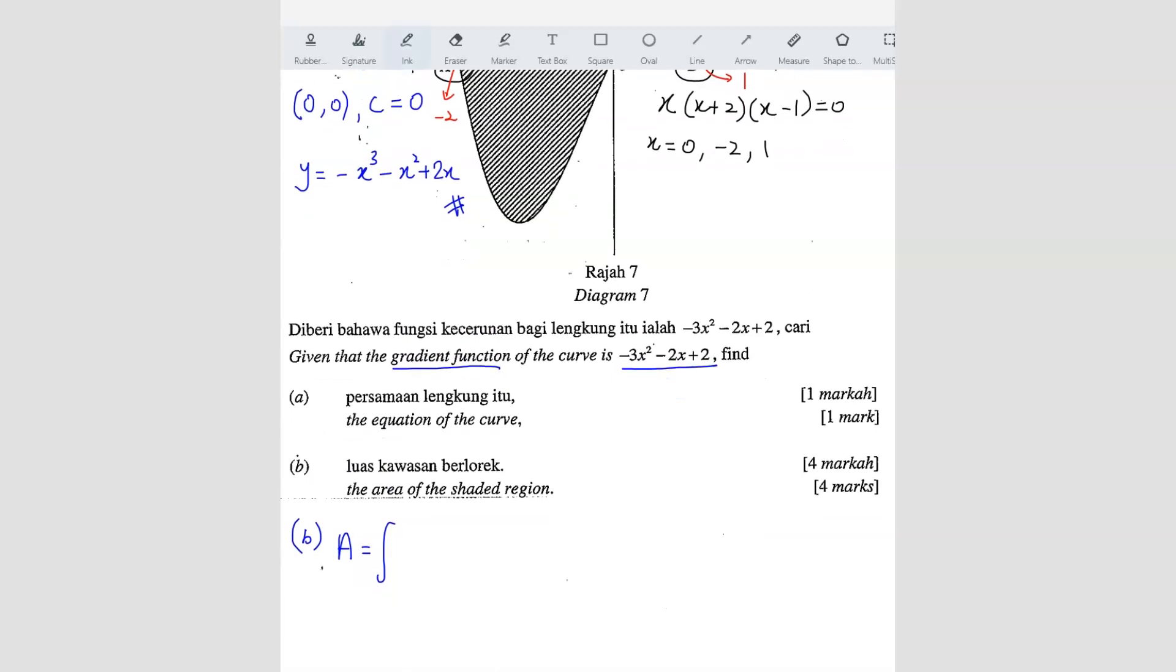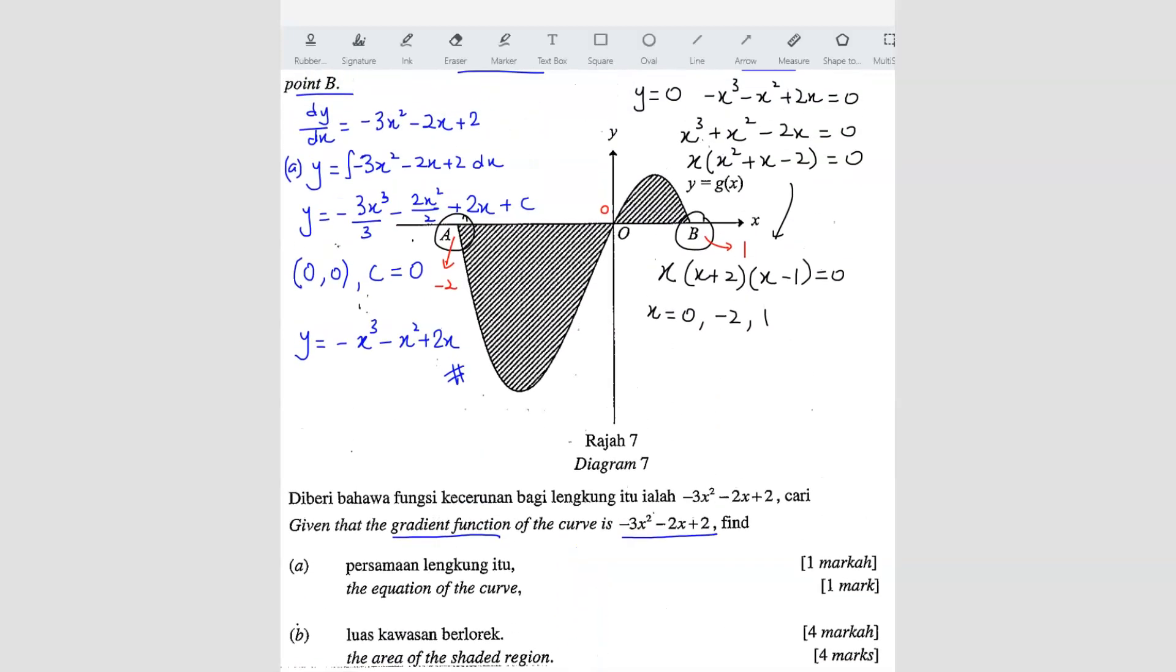So negative 2 to 0 and we're going to use the same curve equation, negative x cube minus x square plus 2x dx. Plus, here don't forget to put modulus because you will get a negative answer. So make sure you modulus it to get positive answer. So here the second range is going to be from 0 to 1.